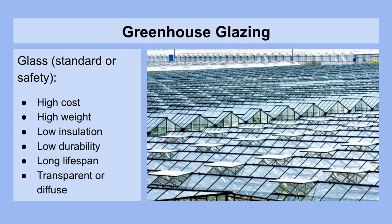The next greenhouse glazing we'll be looking at is glass, and there are various grades of standard and safety glass. It comes at a high cost and also has a high weight, requiring a stronger structure to support it. It usually provides low insulation and has low durability in instances where debris or hail are an issue. However, it has a very, very long lifespan, and it can be transparent or diffuse, allowing in usually quite a lot of light.